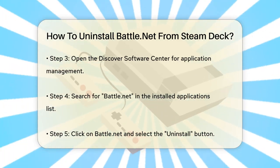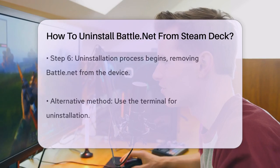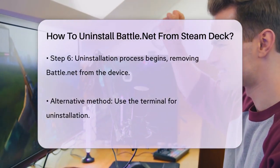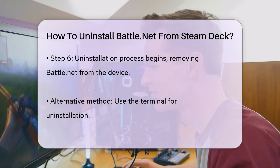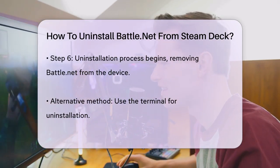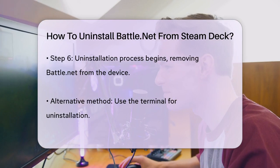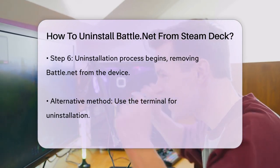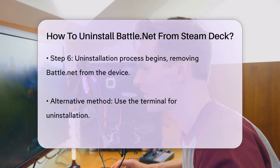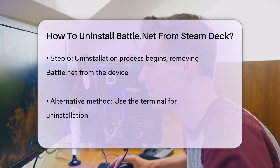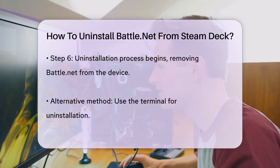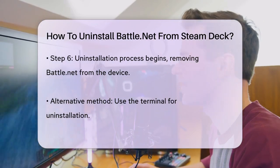Hit the Uninstall button. This will start the uninstallation process, and Battle.net will be removed from your Steam Deck. If you prefer using the terminal, you can also uninstall Battle.net that way. Open the terminal in desktop mode and type sudo apt-get remove Battle.net, or the actual package name if it's different. This command will remove the Battle.net client from your Steam Deck.